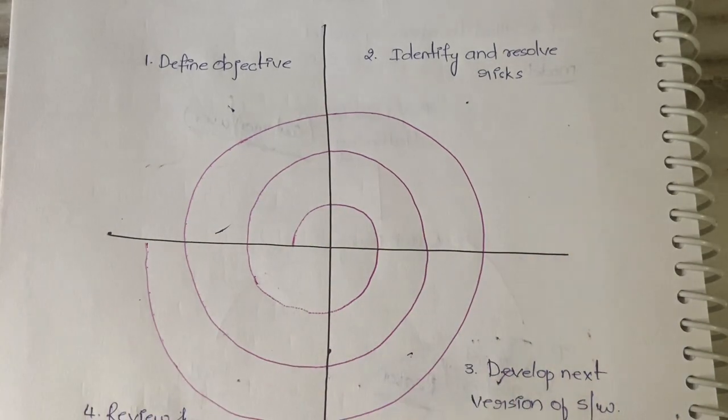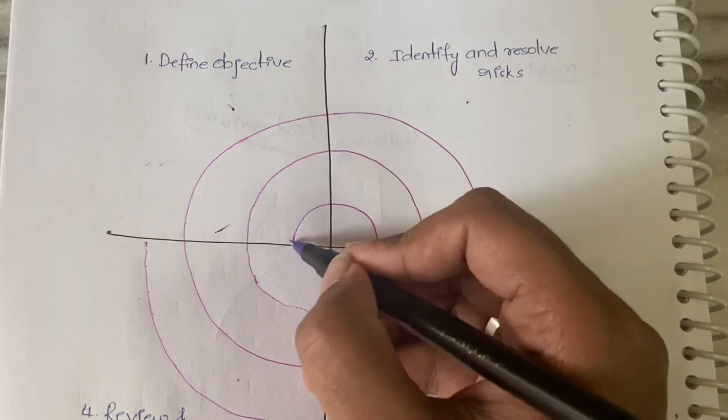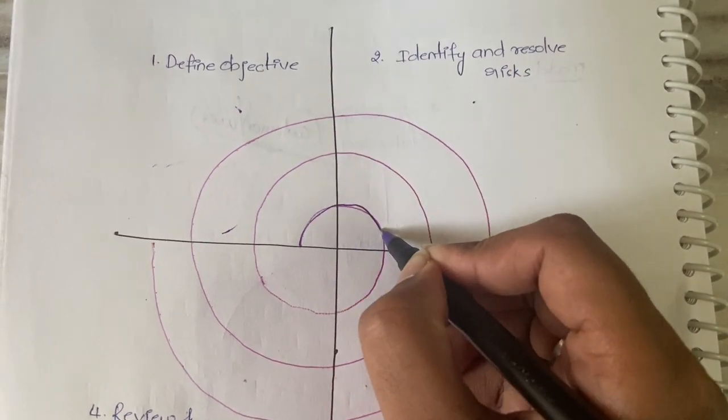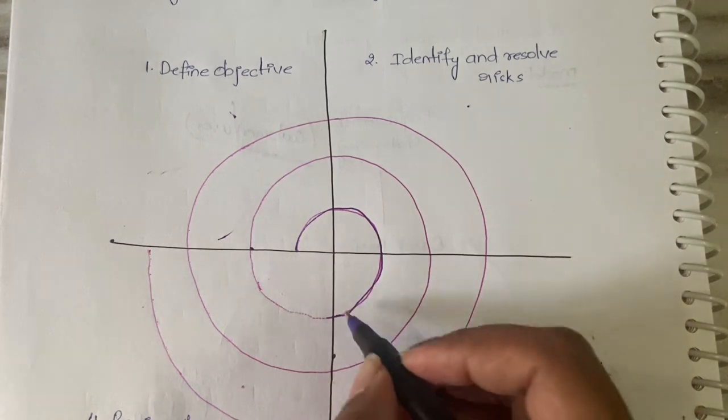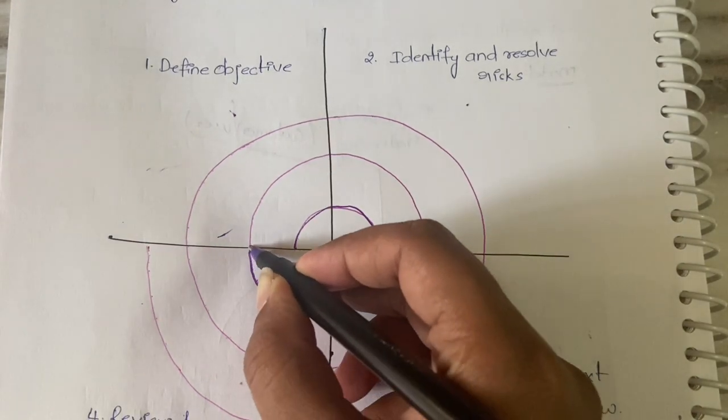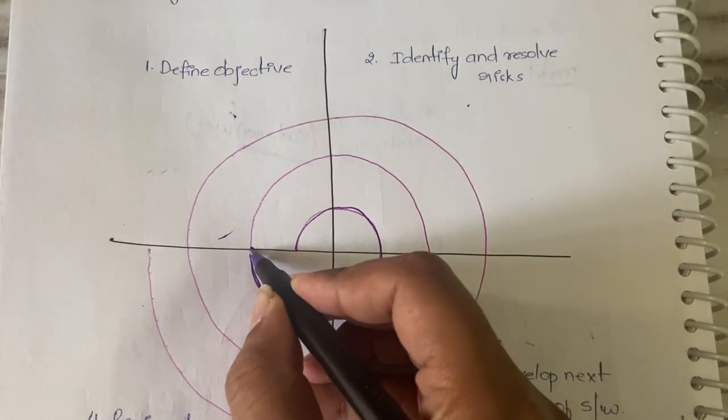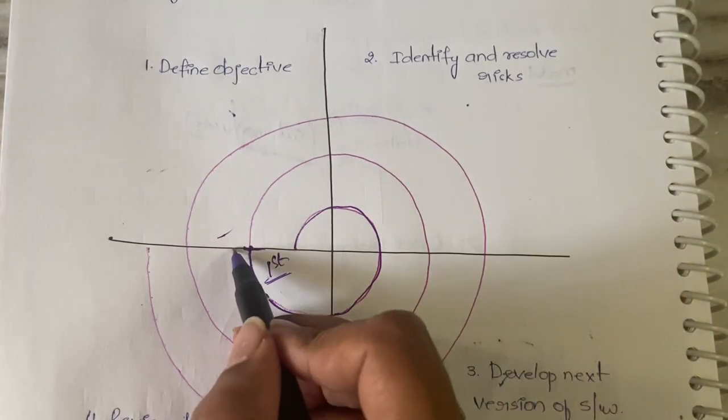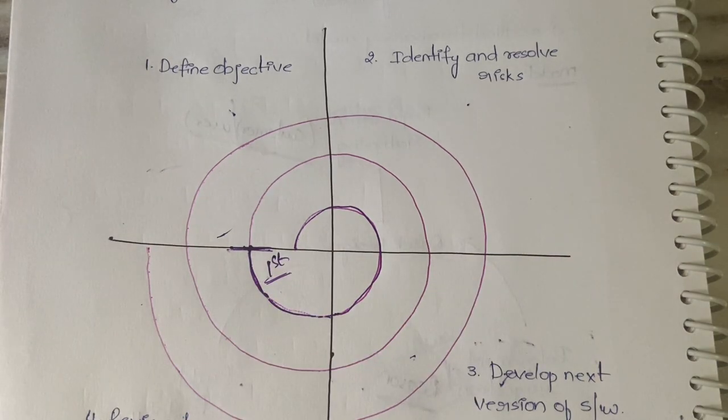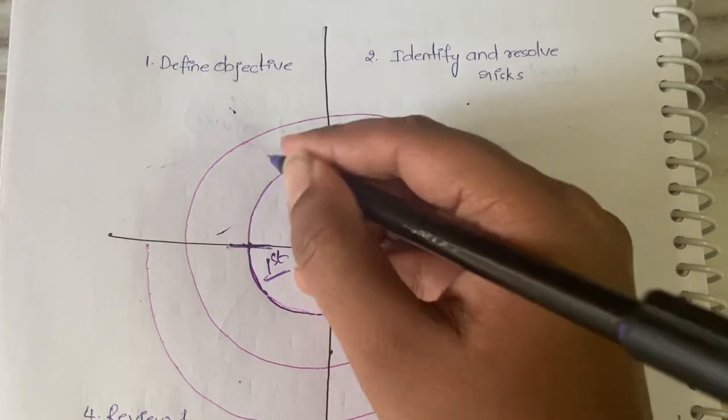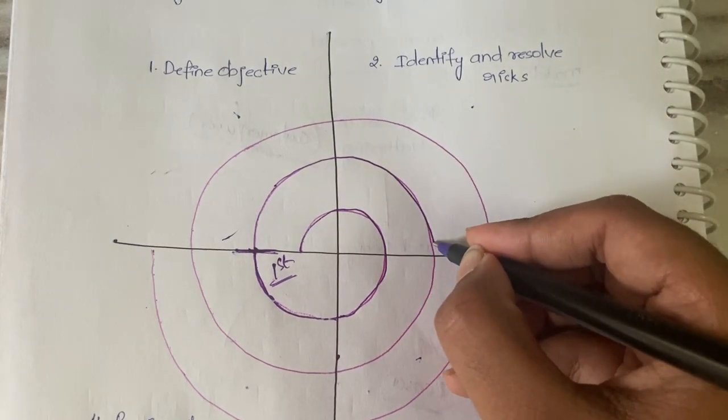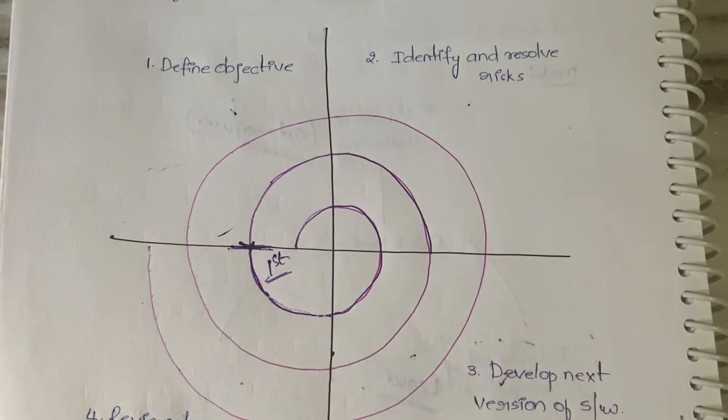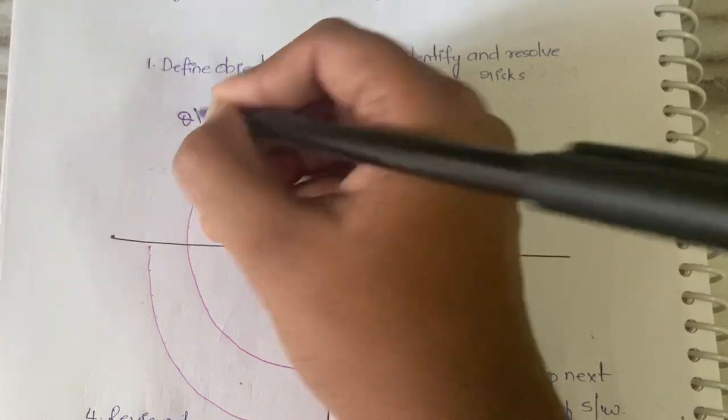It starts from here and moves in this direction. See, it's starting here, and by the time it comes here, one complete cycle is completed - that is, the first iteration is done. Now, when it reaches here, the first iteration is done, right? Then the customer will come, evaluate, and check. If the customer is not satisfied, it will go for the second iteration.